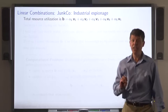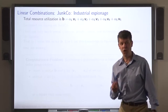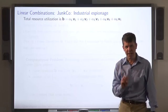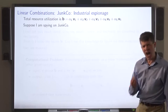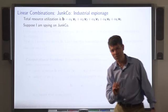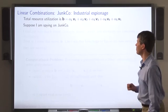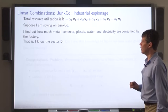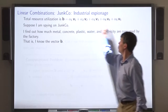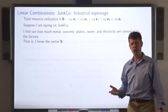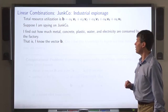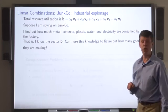I don't know how much of each product Junk Co makes — that's what I want to find out. I want to carry out industrial espionage to figure out exactly how many garden gnomes Junk Co is making. Well, if I know how much of each resource they're consuming, I know the vector b in this equation. And I know the vectors v1 through v5, because I know how much resources making a garden gnome requires. I want to figure out alpha 1 through alpha 5.